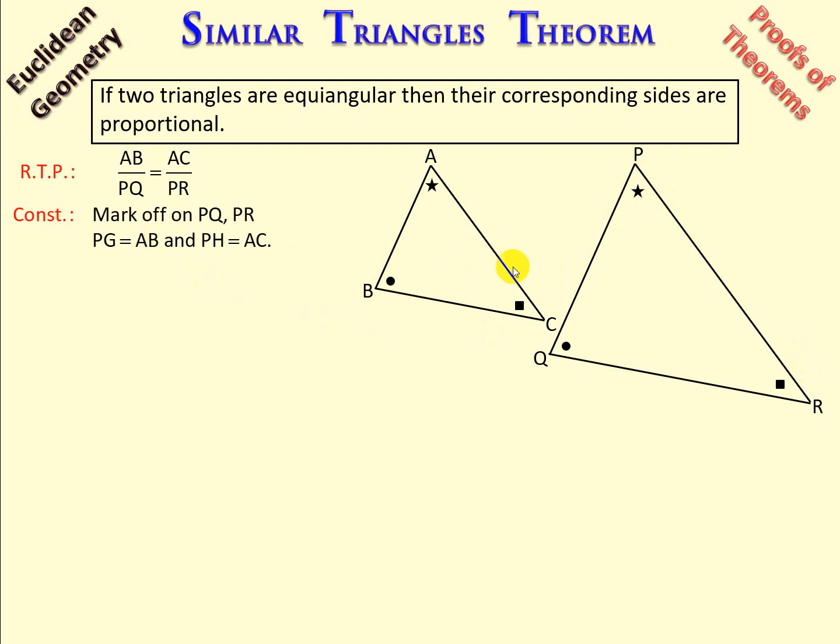We're going to mark off on PQ, we're going to mark off G, and on PR we're going to mark off H, such that PG is equal to AB, and PH is equal to AC.